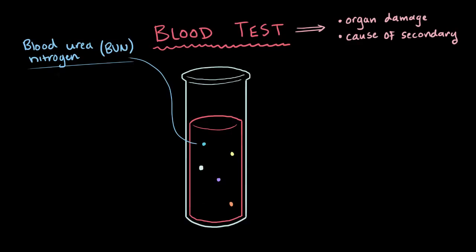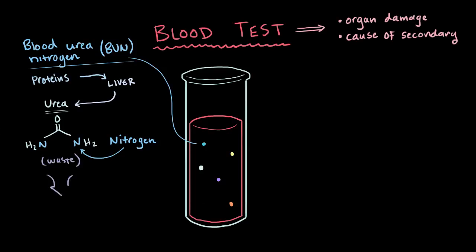The blood urea nitrogen measures how much nitrogen is cruising around in your bloodstream, which comes from the waste product urea. This is formed in the liver from the metabolism of protein. And since it's a waste product, we don't want it, and it gets sent down the bloodstream to the kidneys, where they get rid of it.